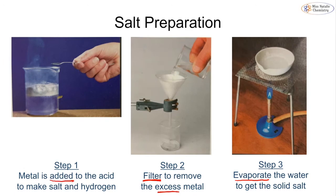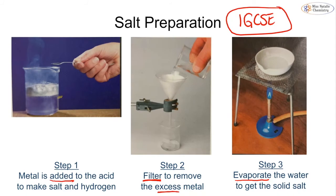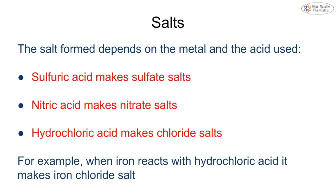So we add the metal to the acid, filter the solution, then evaporate to get our solid salt. You will cover this again at IGCSE and get a chance to carry out this experiment. The salt that we form depends on both the metal and the acid used: sulfuric acid makes sulfate salts, nitric acid makes nitrate salts, and hydrochloric acid makes chloride salts. For example, reacting iron with hydrochloric acid produces iron chloride salt.